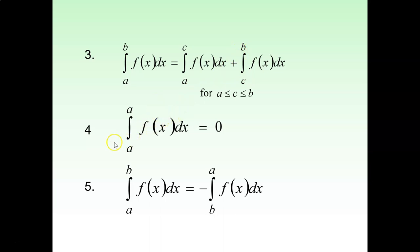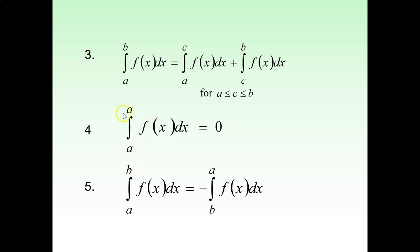The fourth property is that the integration from a to a of f(x) dx equals 0. For example, integration from 1 to 1, or 2 to 2, or 4 to 4 — when the starting value and ending value are the same, you will get 0 for that integration.